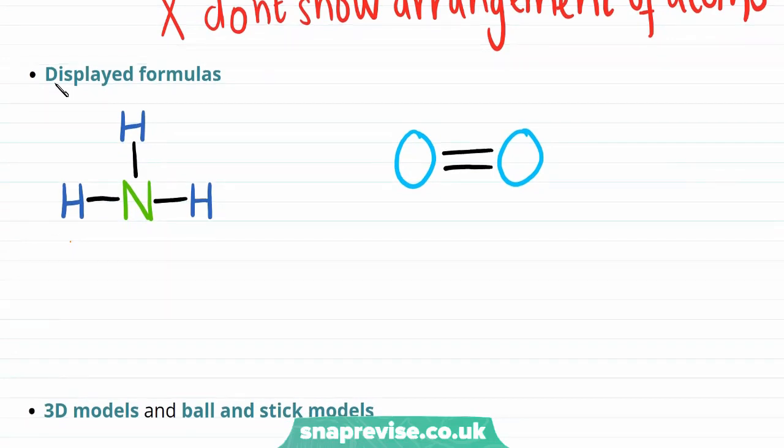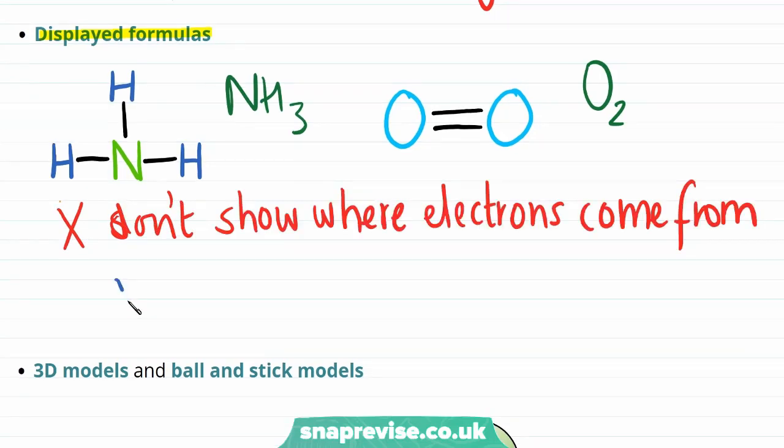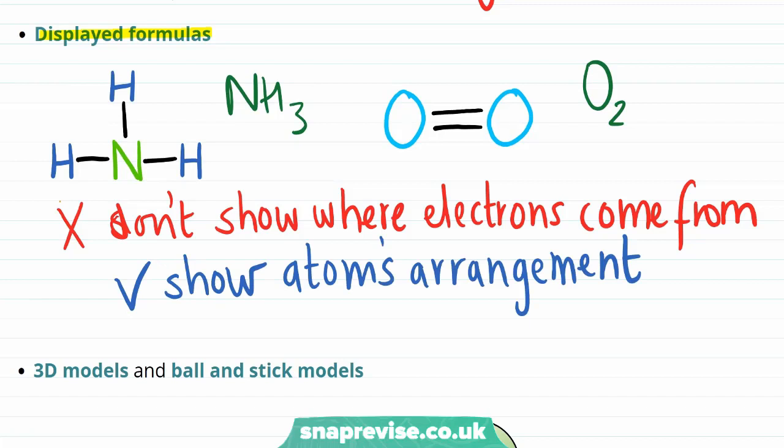Another variety of representation is the displayed formula, which you can see examples of here for ammonia and oxygen. Displayed formulas don't show where electrons come from, but they do show the arrangement of atoms in space. However, this arrangement is only 2D, not 3D.